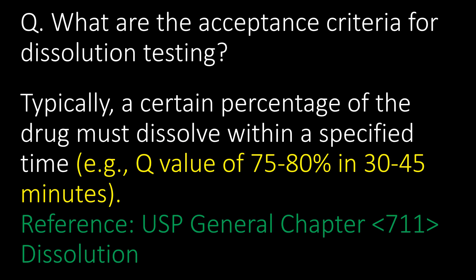What are the acceptance criteria for dissolution testing? Typically, a certain percentage of the drug must dissolve within a specified time — for example, a Q value of 75 to 80% in 30 to 45 minutes. Reference: USP general chapter number 711, Dissolution.